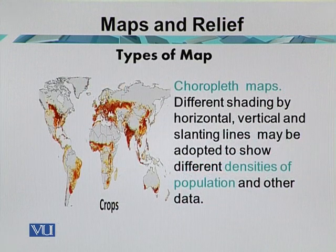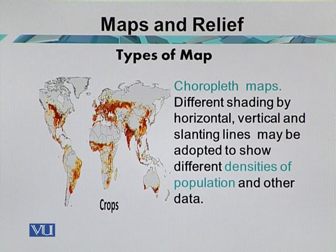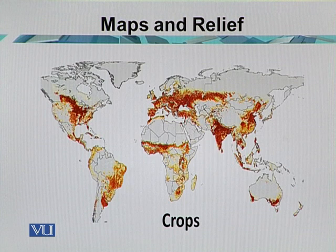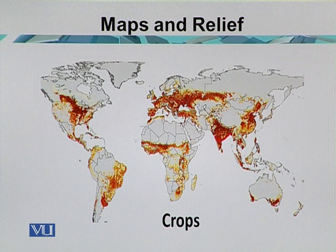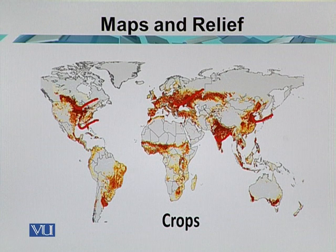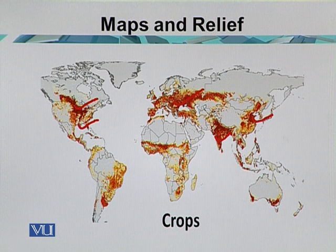The next category of the map is the choropleth map. Different shades using horizontal, vertical, and slanting lines may be adopted to show different densities of population and other data. Here we have the major crops of the world, mostly belonging to South Asian countries, East Asian countries, the European lowlands, and the northern and central parts of the USA. Different colors show the different types of crops.